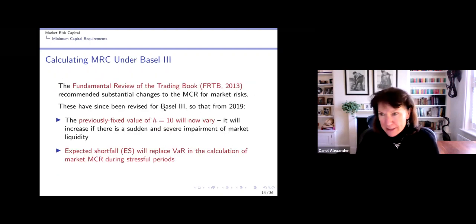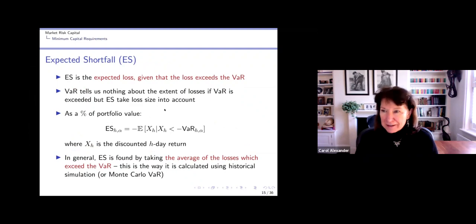I hate the term expected shortfall, sorry, I always use expected tail loss. Expected shortfall sounds as though you're measuring the shortfall relative to some target amount, and it's not really anything to do with that. So unfortunately, it's a terminology that's become adopted. But in my books, market risk analysis books, I always use ETL, expected tail loss. So what is this thing that banks call expected shortfall? It's the expected loss, provided the loss exceeds the VaR. Now, the thing about VaR is that it tells us a level of loss which we hope will not be exceeded.